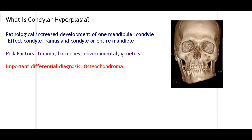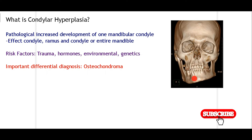Now let's begin with talking about what actually is condylar hyperplasia. In this picture you can see the condyle. We have the mandibular teeth and maxillary teeth, the body of the mandible, ramus, coronoid process, and the condyle. Sometimes there is an increase in size of this condyle — it can be unilateral or bilateral, but in most cases it's unilateral. As you can see in this picture, one side of the mandible appears normal, but the other side shows an increase in size of the condyle.